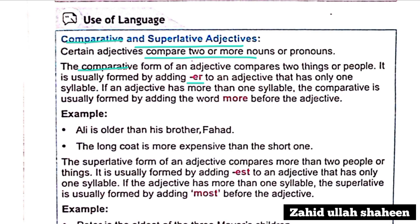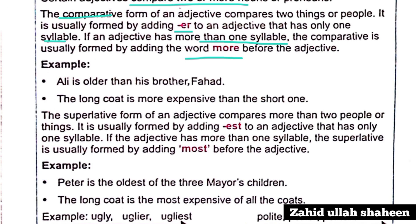For adjectives that have one or more syllables: if an adjective has more than one syllable, the comparative is usually formed by adding the word 'more.' If the syllable is one, you add '-er.' For example: 'He is older than his brother.' If the adjective has more than two syllables, the comparative uses 'more' — for example, 'more expensive.'